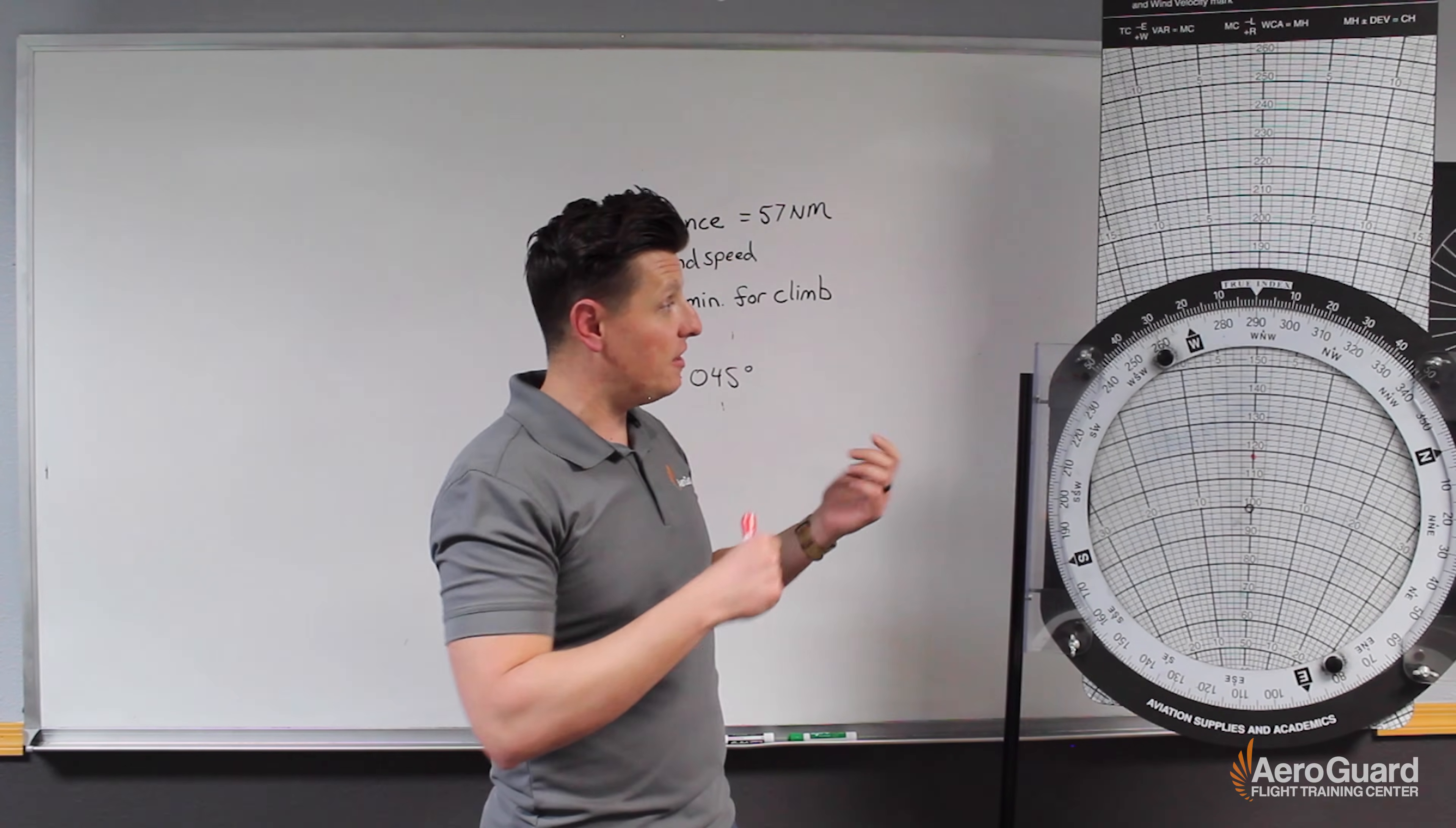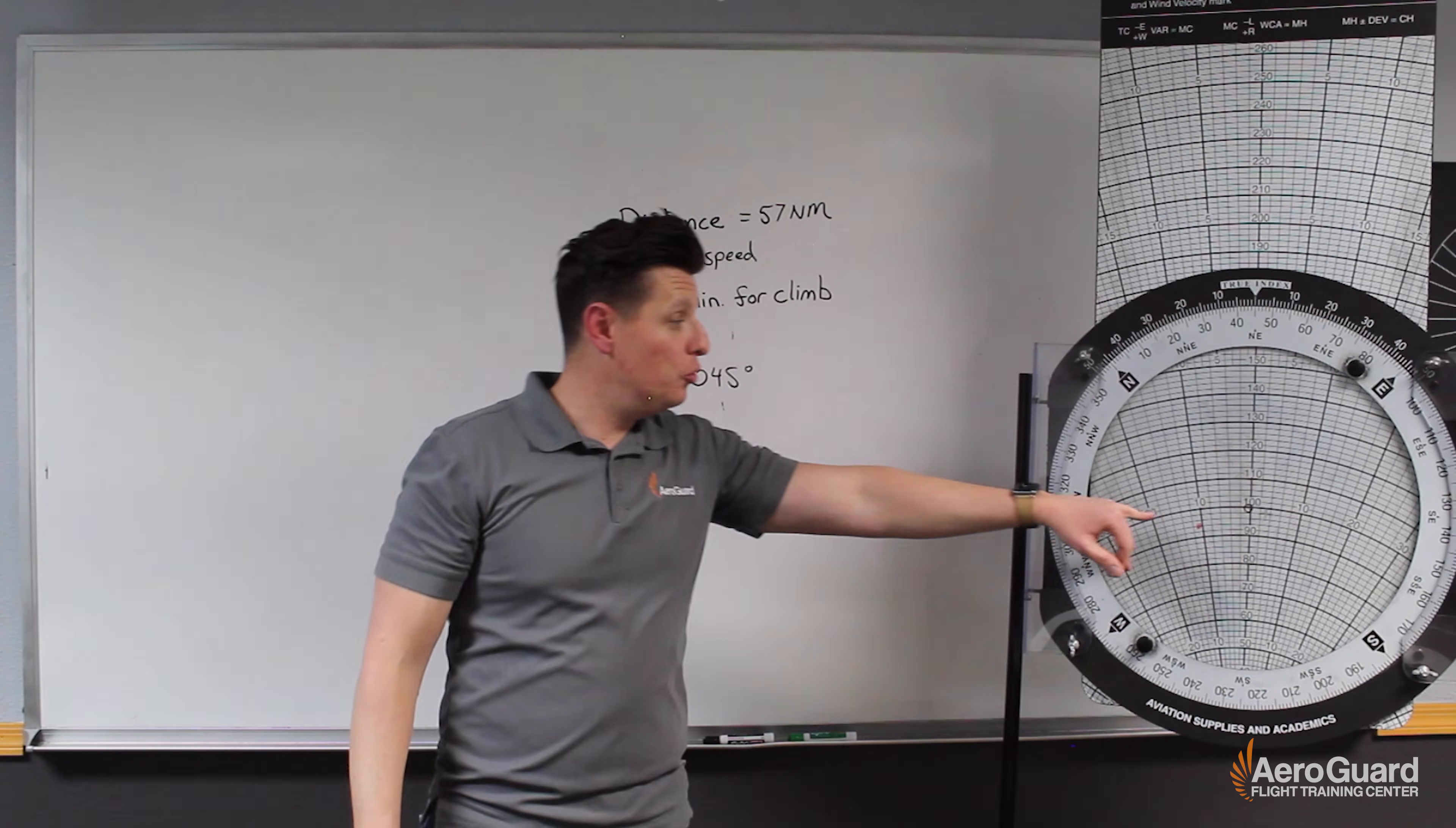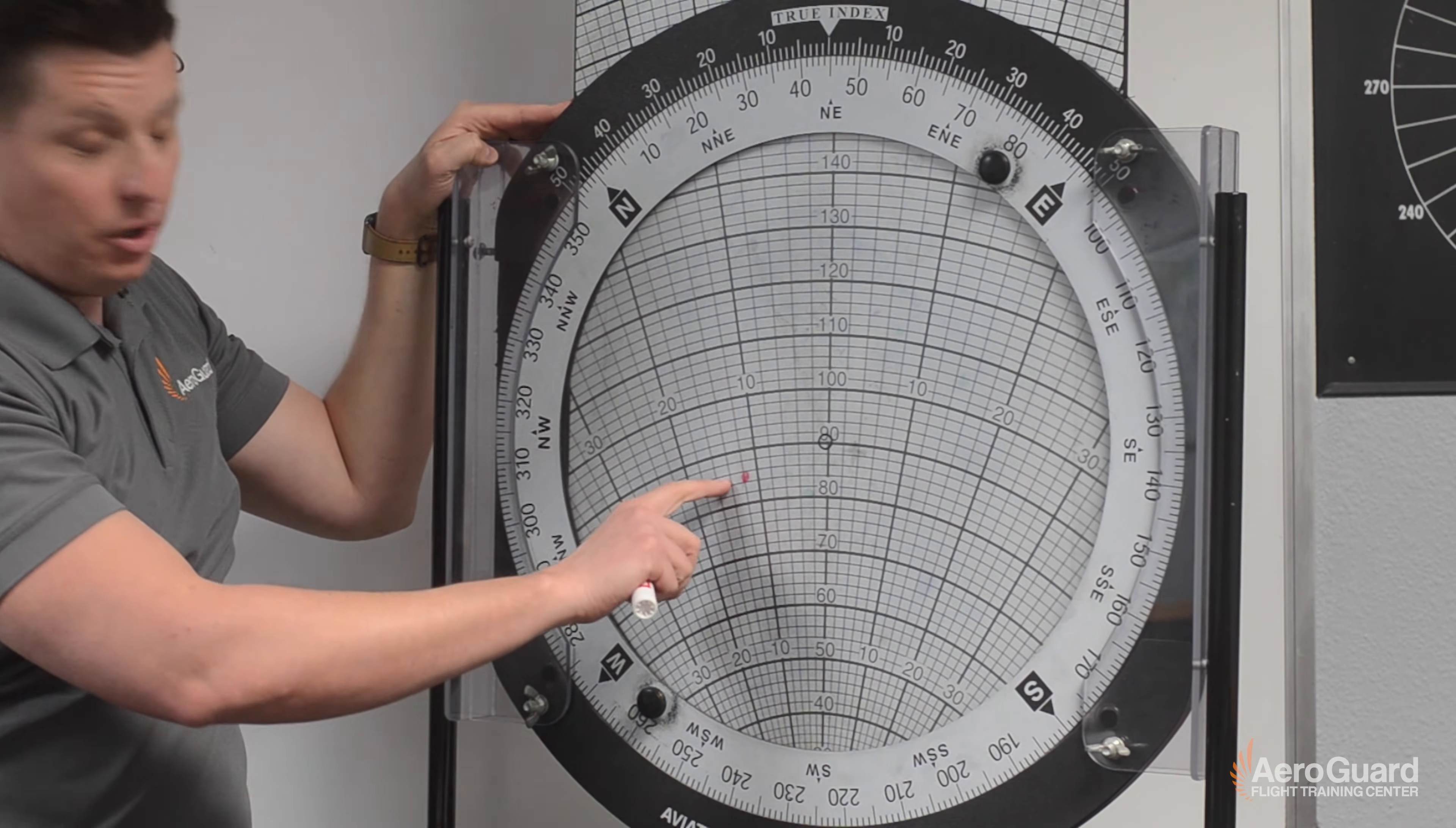The next step will tell us that we should rotate our true course under the true index. As we recall our true course was 045 degrees. So what I'll do is rotate in our true course. And next our next step will be to move this wind dot until it's under our true airspeed. So in this example they told us our true airspeed was 85 knots. So I'm simply going to lift this up until we see 85 knots is riding under the wind dot.